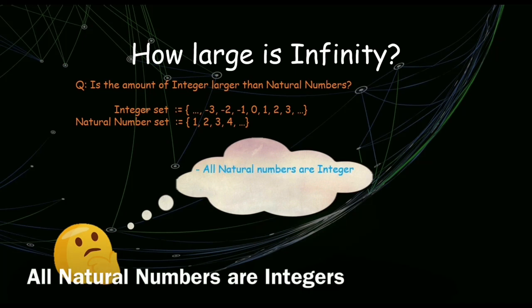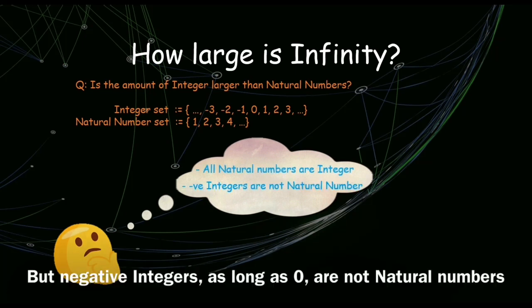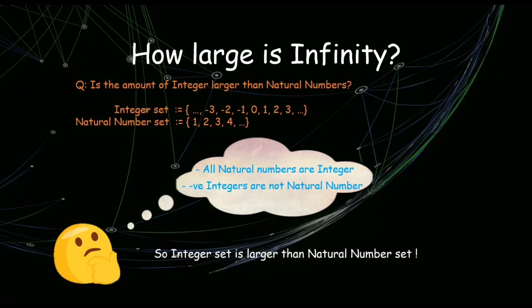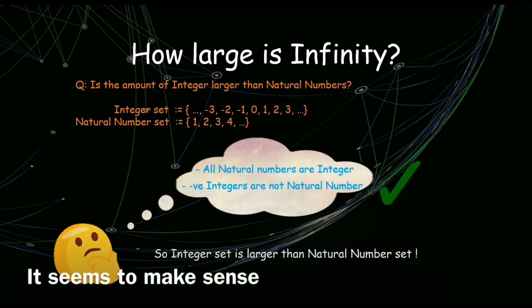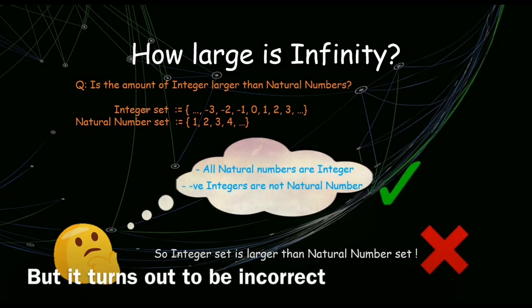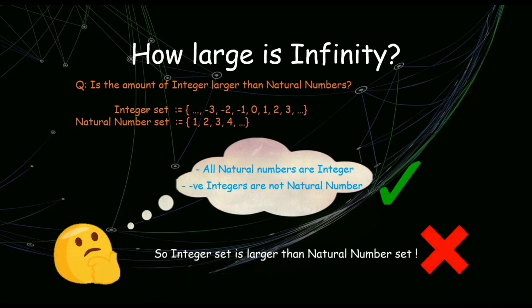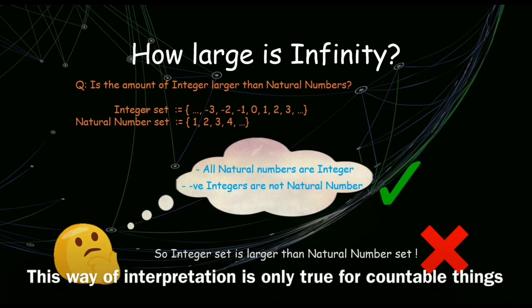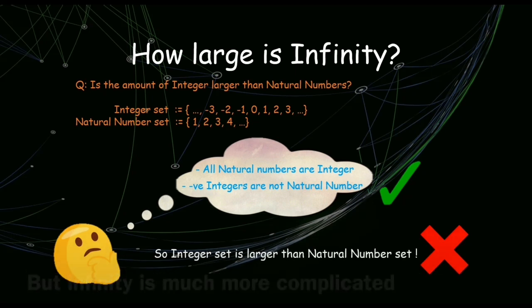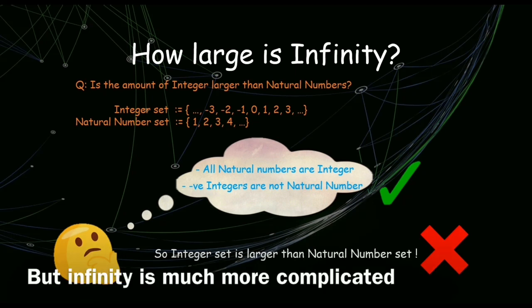All natural numbers are integers. But negative integers, as well as zero, are not natural numbers. So, the integer set is larger than the natural number set. It seems to make sense. But it turns out to be incorrect. This way of interpretation is only true for countable things. Infinity is much more complicated.